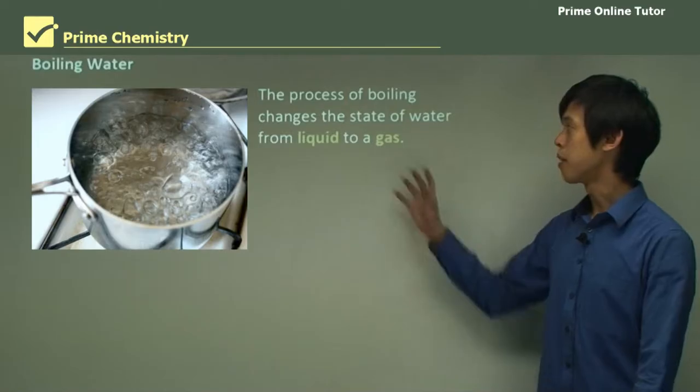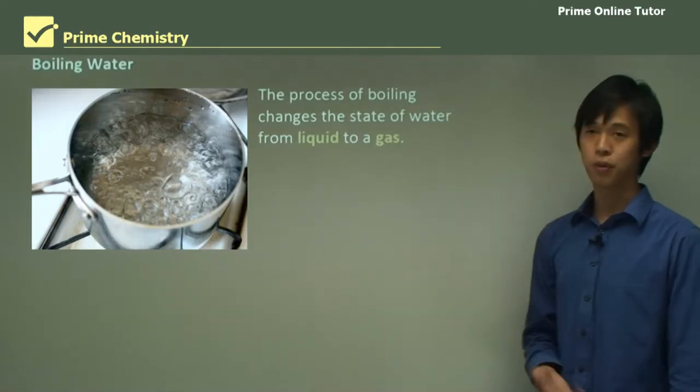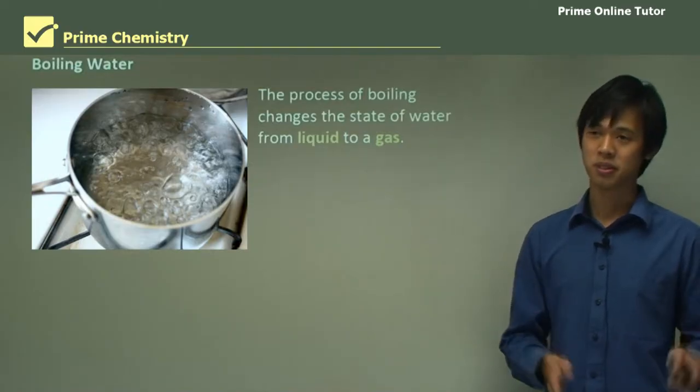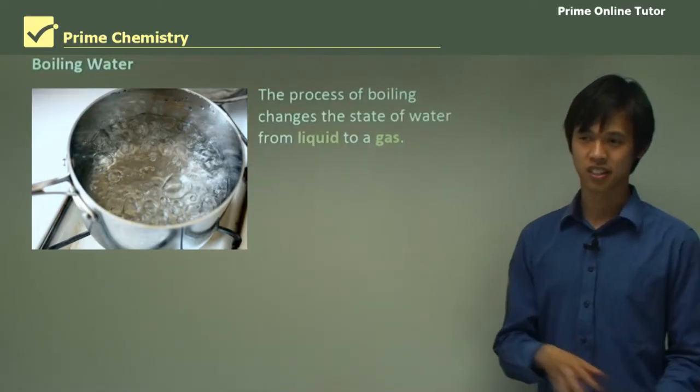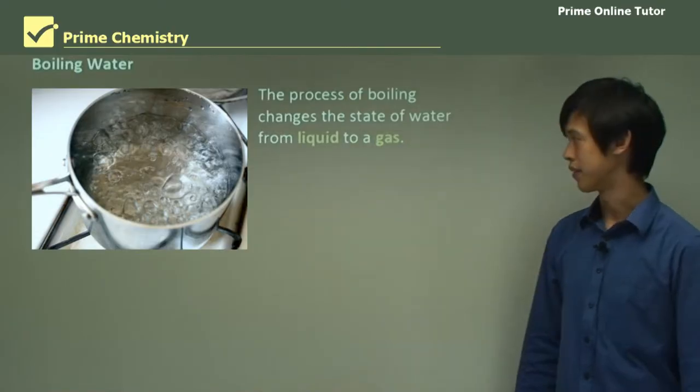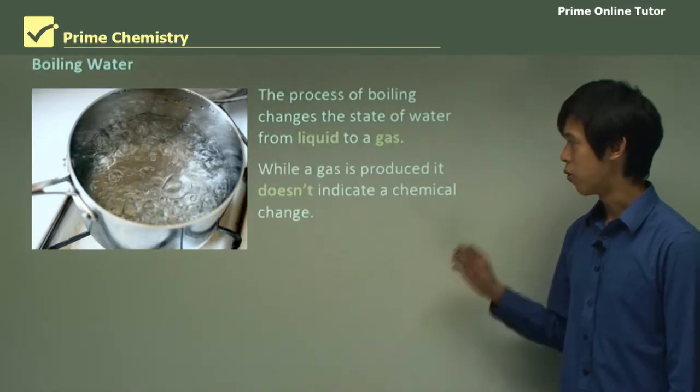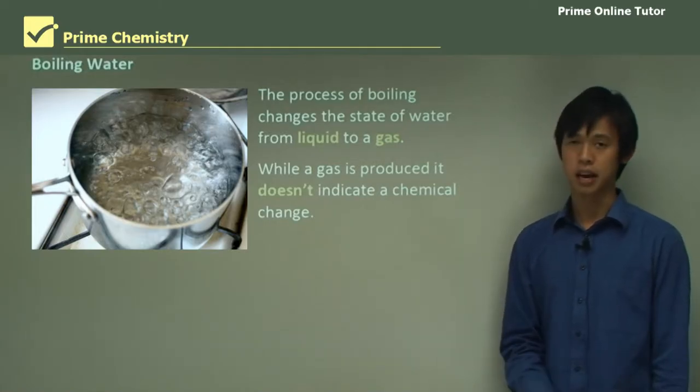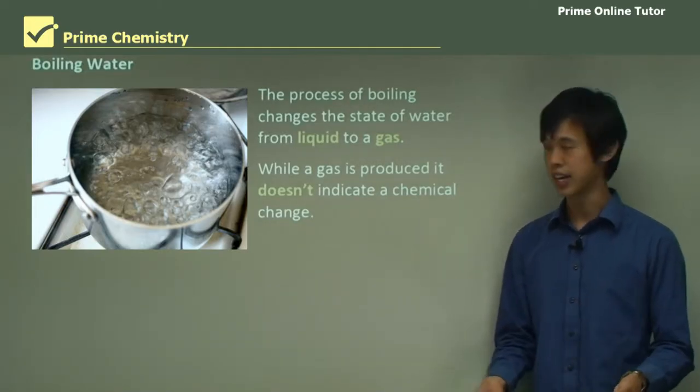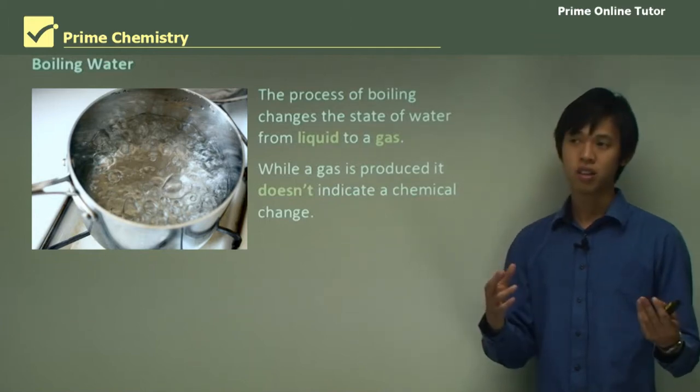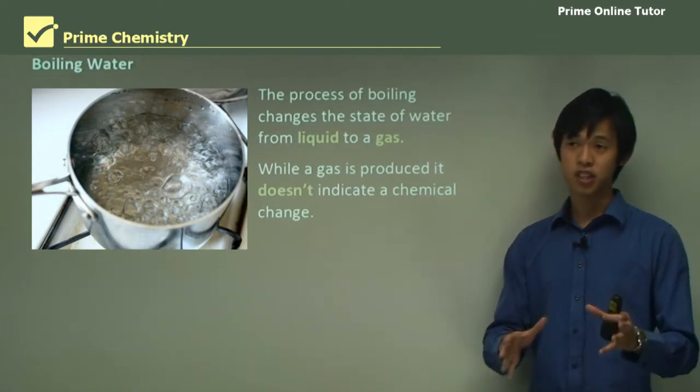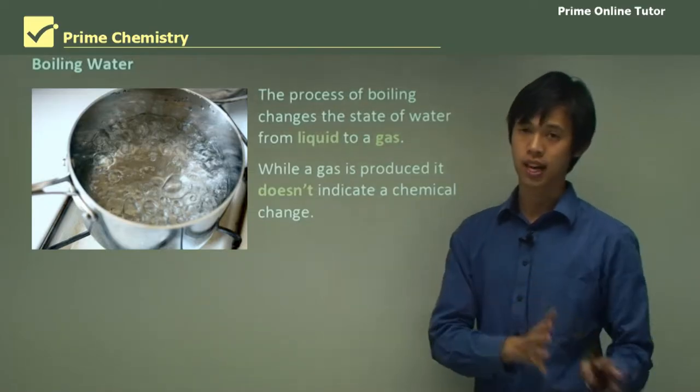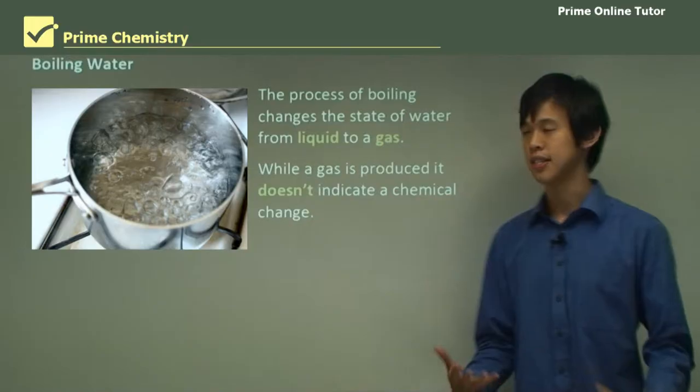Boiling water: the process of boiling water changes the state of water from liquid to a gas. Since we've been in primary school, we've known that boiling turns water into gas. Now while a gas is produced, it doesn't mean that a chemical change is happening. It's not just the evolution of a gas, it's the evolution of a gas with different properties to what we started with.